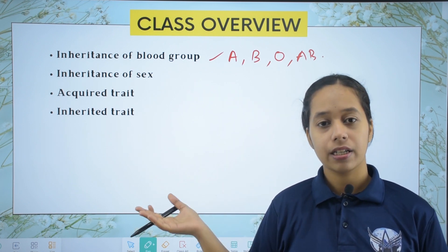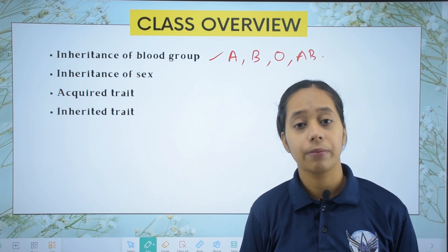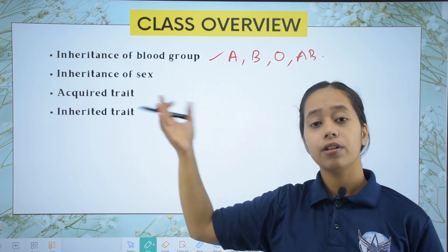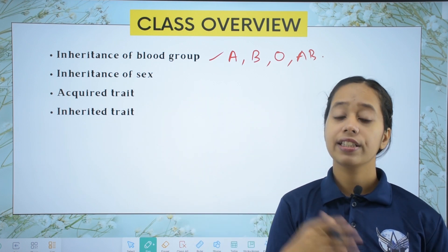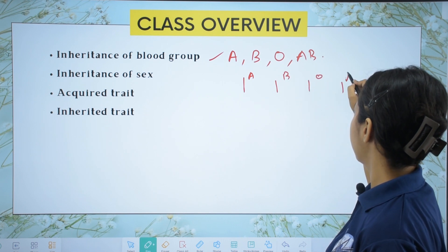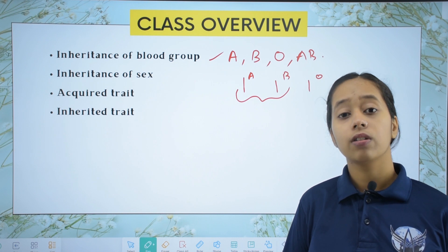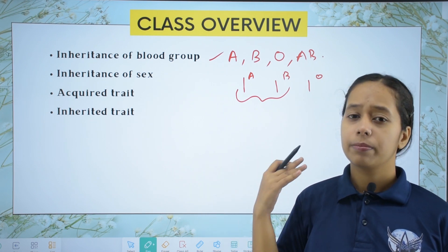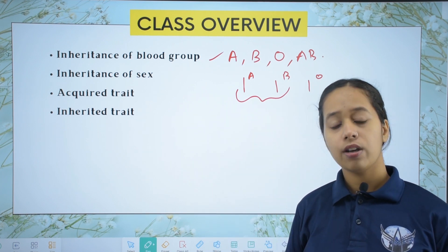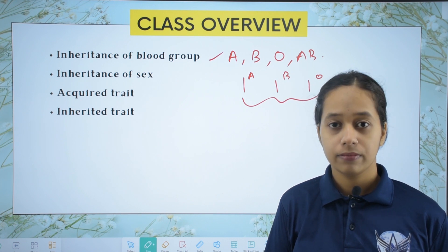Blood groups also come as positive and negative — A positive, A negative, B positive, O positive, O negative, AB negative, AB positive, and so on. But the fundamental blood groups are determined by two genes. The genes that determine these blood groups are IA, IB, and IO. IA and IB are codominant — none of them are dominant over the other, none are recessive over the other. They are at the same level. However, both A and B are dominant over O.